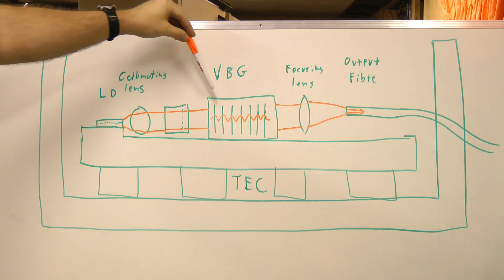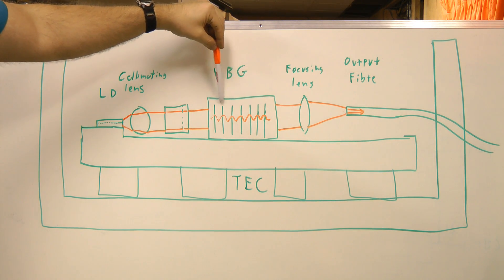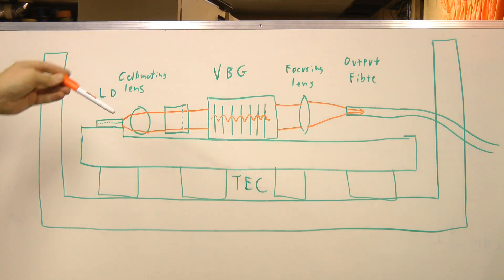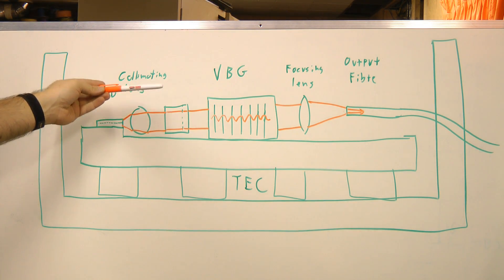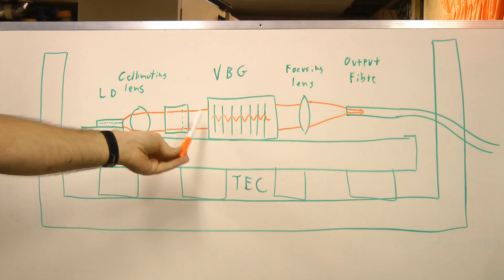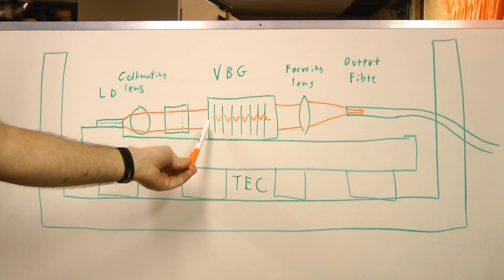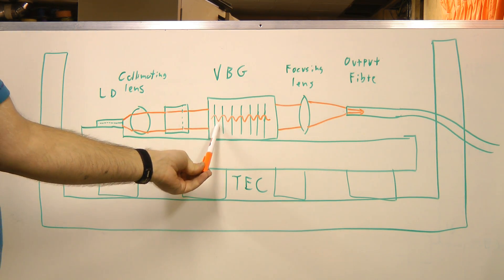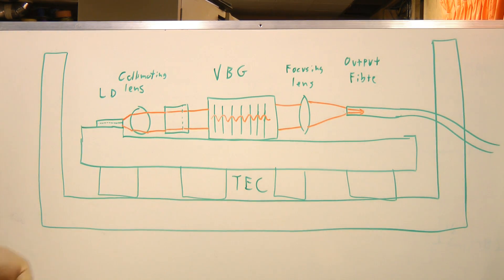And to actually create the index of refraction variations, the piece of glass is illuminated from both sides with a laser. This creates an interference pattern inside the element of large amounts of light, small amounts of light repeating.